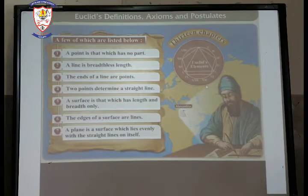Euclid gave 23 definitions in chapter 1 called book of elements. A few of which are listed: A point is that which has no part. A line is breadthless length. The ends of a line are points. Two points determine a straight line. A surface is that which has length and breadth only. The edges of a surface are lines. A plane is a surface which lies evenly with a straight line on itself.